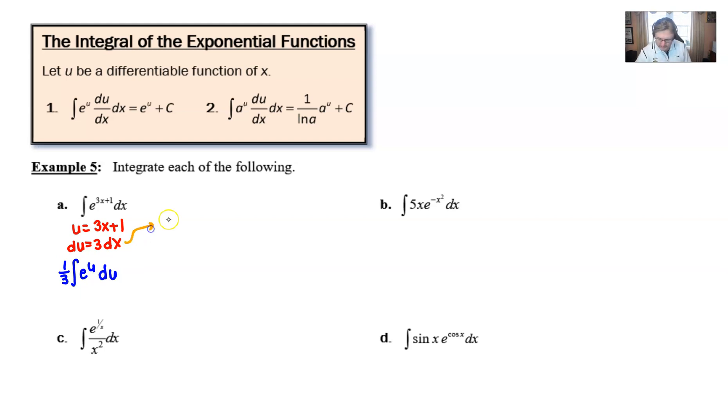You're basically going to find dx by getting it by itself, dividing the 3 over, and then once you rewrite this integral, it becomes integration e to the u, and then the dx gets replaced with du over 3. And you can see that that just takes us full circle back to where we are.